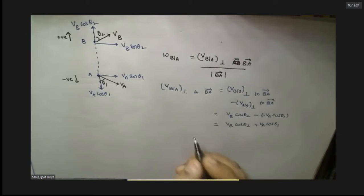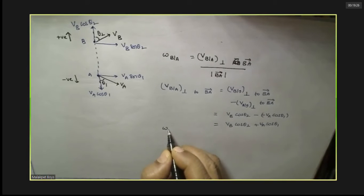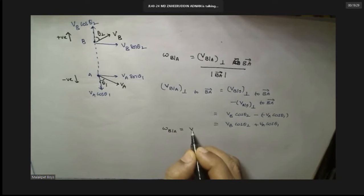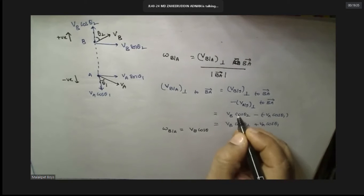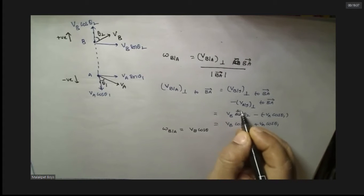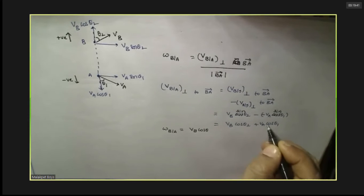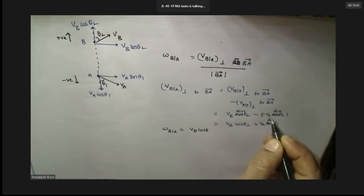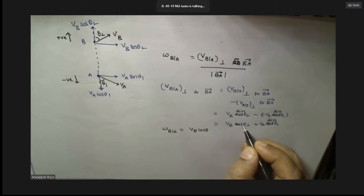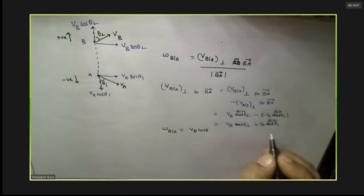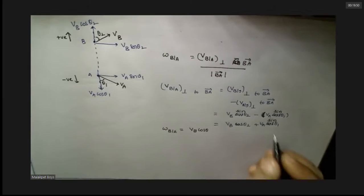What is omega BA now? What is the angular velocity of B with respect to A? Sir, perpendicular to BA is VB sine theta 2. Due to cos theta. Is the effect of the fellow? Sir, the negative sign will go. It will not be one, sir. Both are in the same direction. Yes, sir. Right.